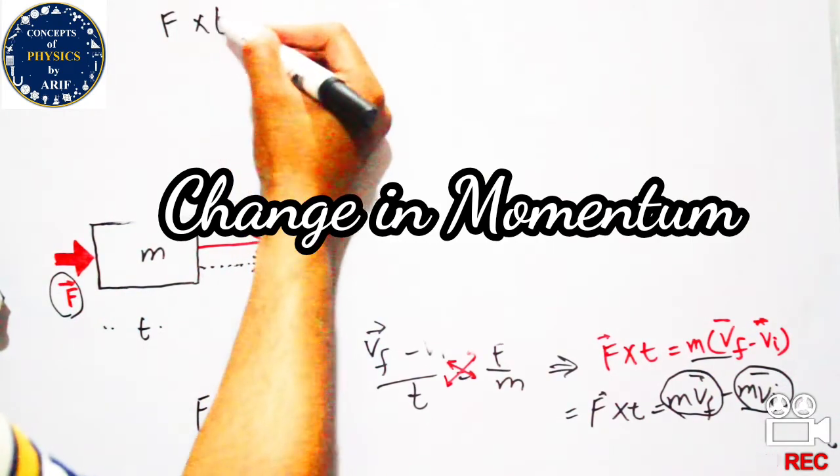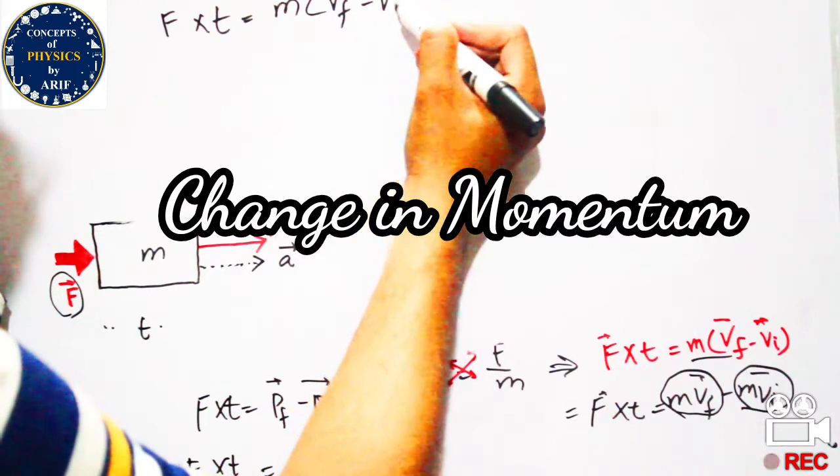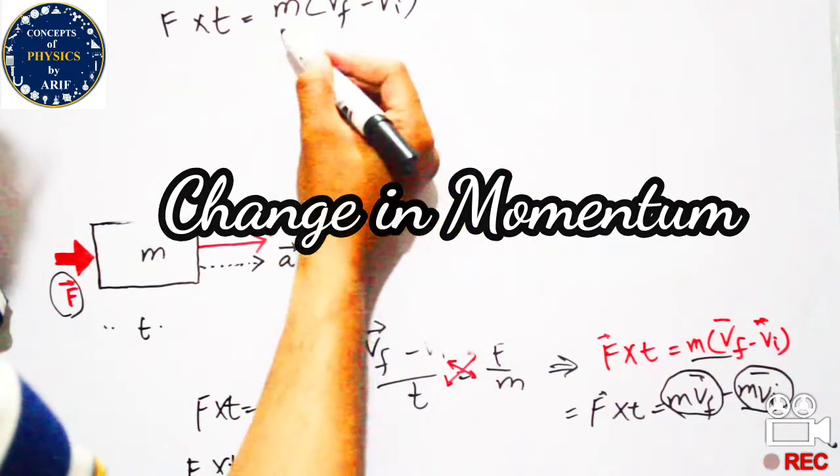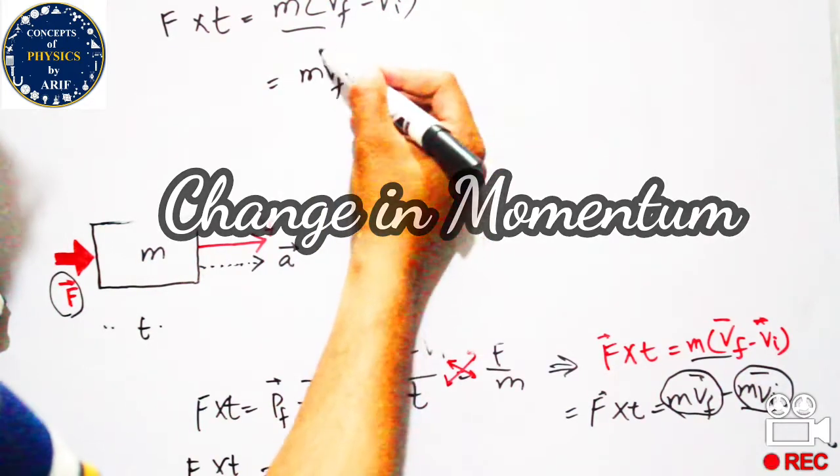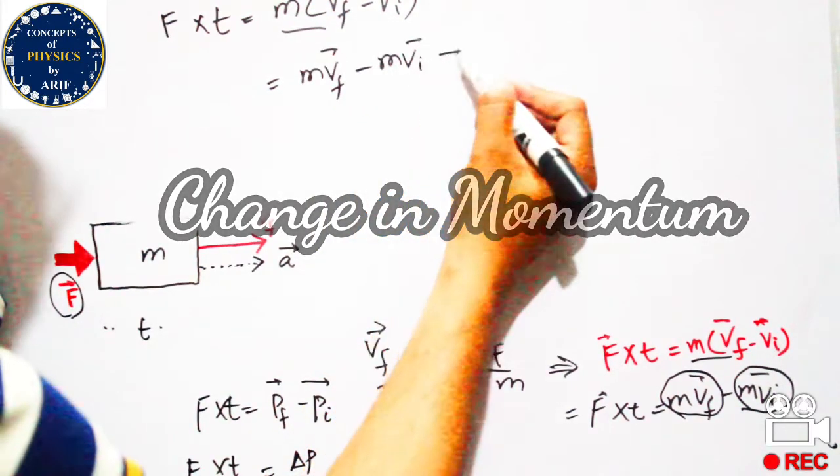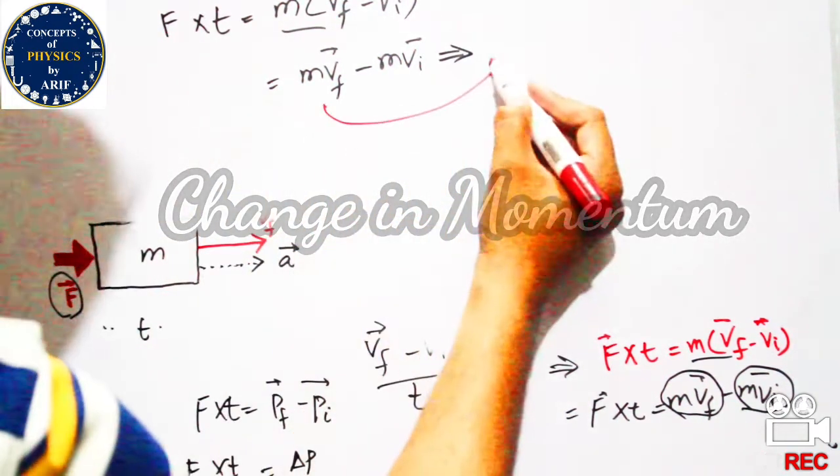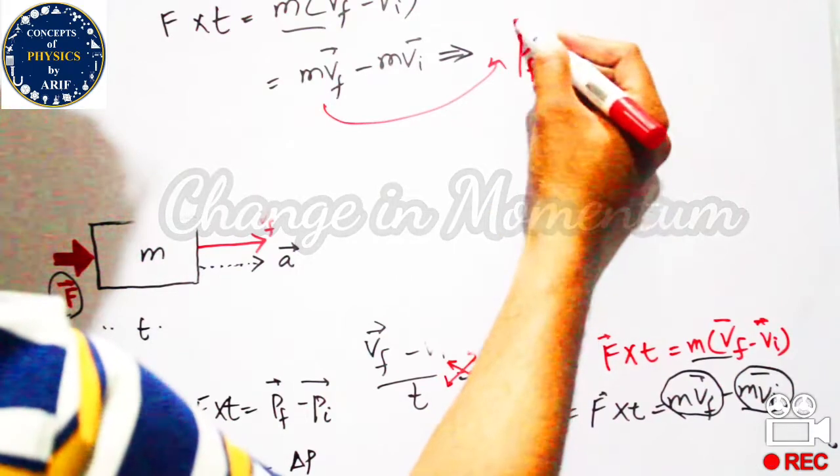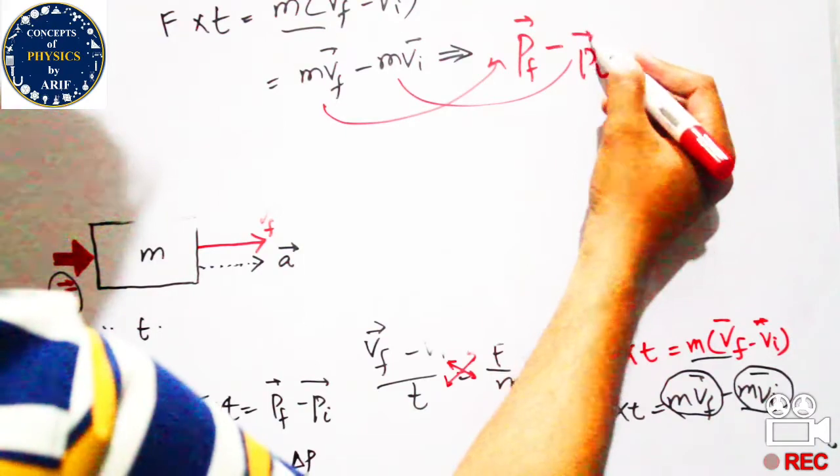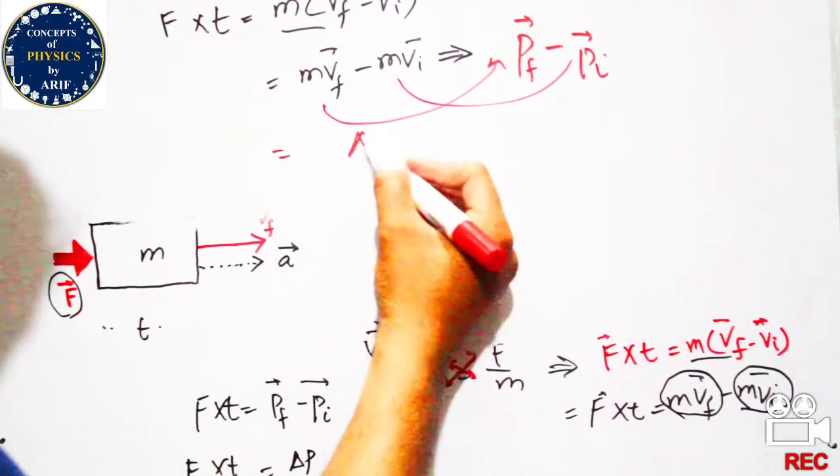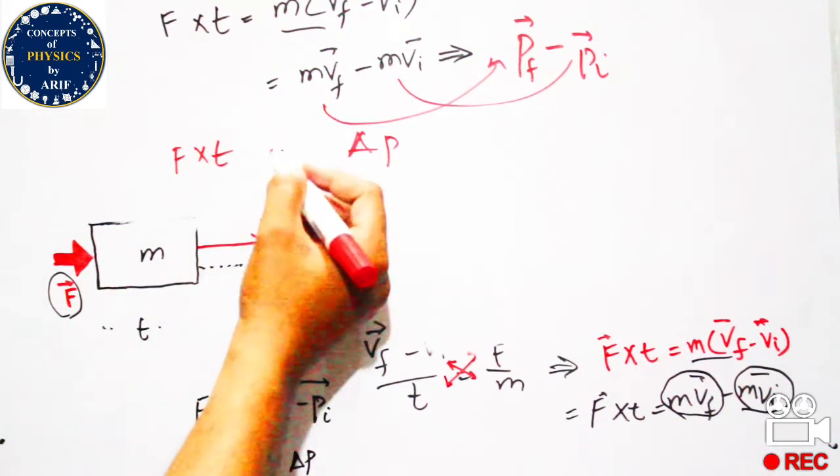Restating: F×t = m(vf - vi) = mvf - mvi, which is final momentum pf minus initial momentum pi. This change in momentum F×t means that the change in momentum of a body equals the product of applied force multiplied by time.